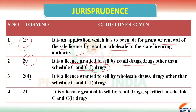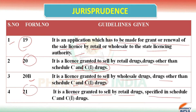Form Number 21 contains that it is a license granted to sell by retail drugs specified in Schedule C and C1 drugs. Students, try to note this down because it is very confusing — Form 20 covers drugs other than C and C1, while Form 21 covers Schedule C and C1. Please note it down and revise on time so it will be more helpful for your exam.